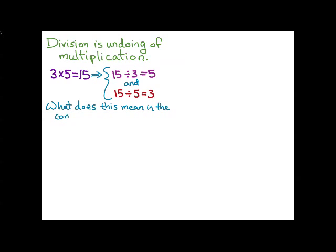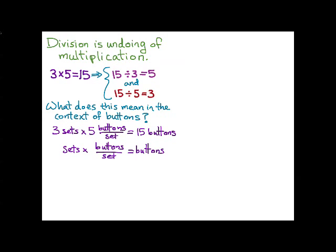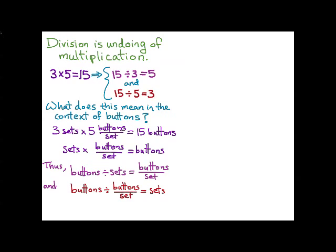What does this mean in the context of buttons and sets of buttons? If we take three sets and we multiply by five buttons per set, we get 15 buttons. And if we strip off the numbers, we get this simple unit equation, this unit analysis equation. I can switch it around to find the two division problems. The first one would give me buttons divided by sets is equal to buttons per set. And if you're familiar with this notation, this might seem pretty obvious. It's almost just a change of notation from the left side of the equation to the right side.